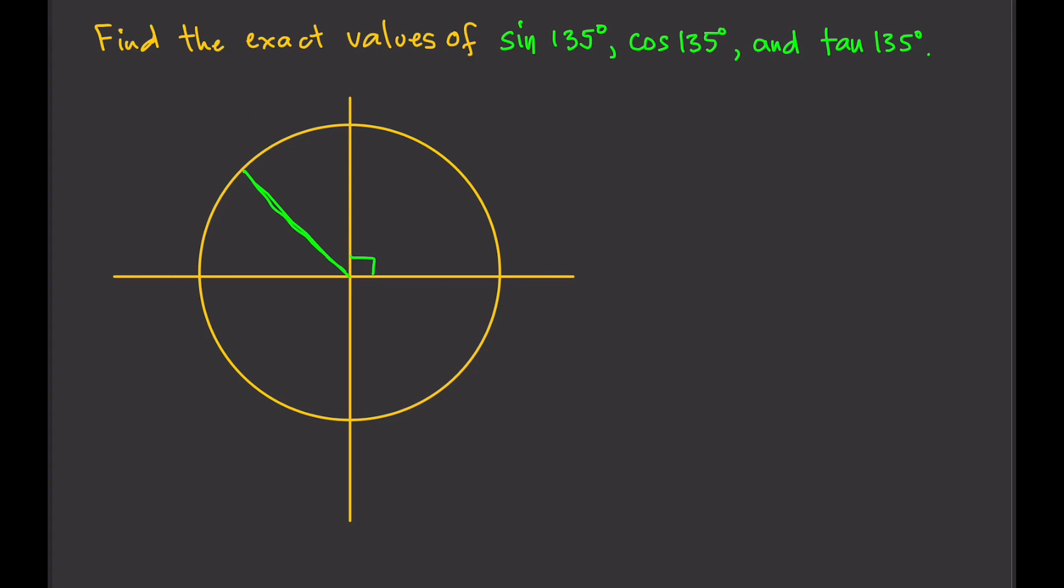So just assume that this is a straight line. All we need is the coordinates of that point right there. So that's all we need. This is again, 135 degrees.